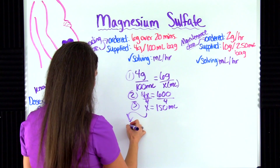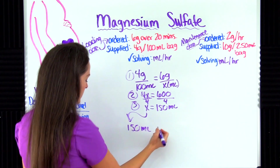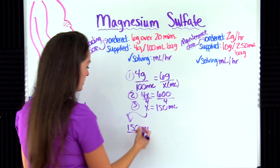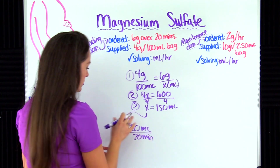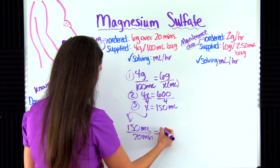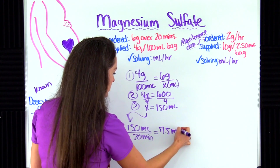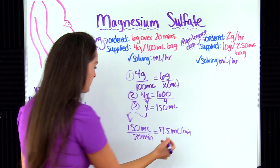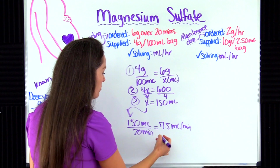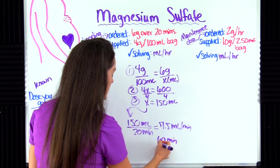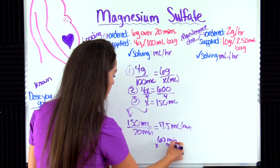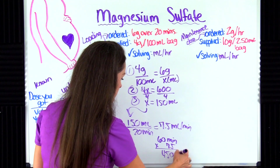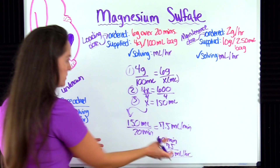We take 150 milliliters over 20 minutes and divide: 150 divided by 20 gives 7.5 milliliters per minute. But the problem wants milliliters per hour, so we multiply by 60 minutes per hour: 7.5 times 60 gives us 450 milliliters per hour. That is our answer for the loading dose.